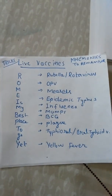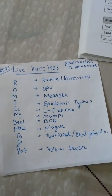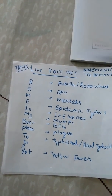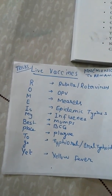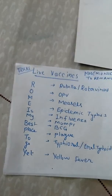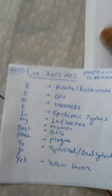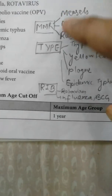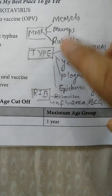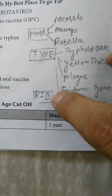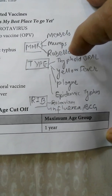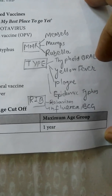As you know, Measles, Mumps, and Rubella are collectively remembered as the MMR vaccine. So here you can see the alternate mnemonic: 'MMR TYPE RIB.' MMR covers Measles, Mumps, and Rubella. TYPE means T for Typhoid, Y for Yellow Fever, P for Plague, and E for Epidemic Typhus.